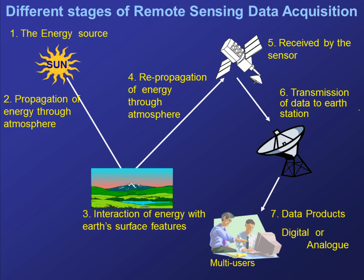In the third step, interaction with the target: once the energy makes its way to the target through the atmosphere, it interacts with the target depending on the properties of both the target and the radiation. Fourth is the re-propagation of energy after the energy has been scattered or emitted from the target. The fifth step is received by the sensor — we require a sensor to collect or record the electromagnetic radiation.